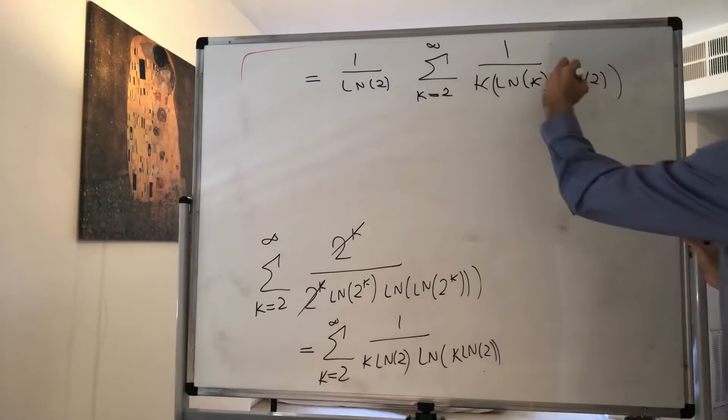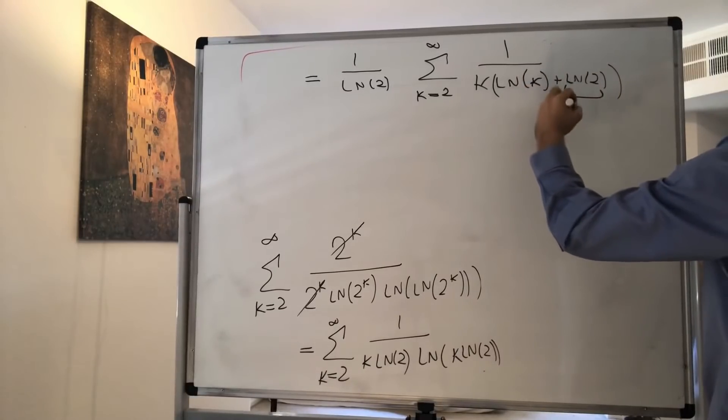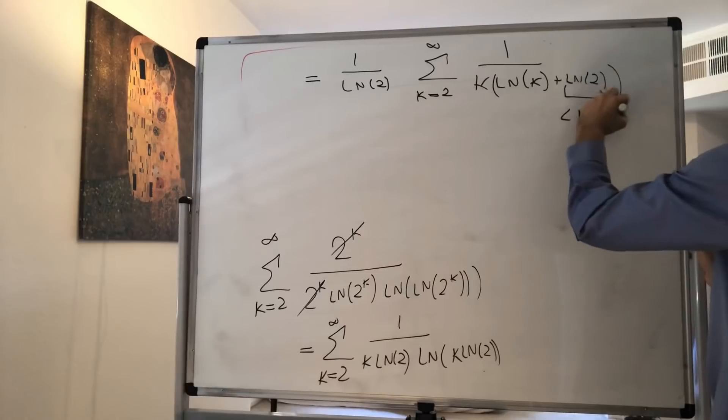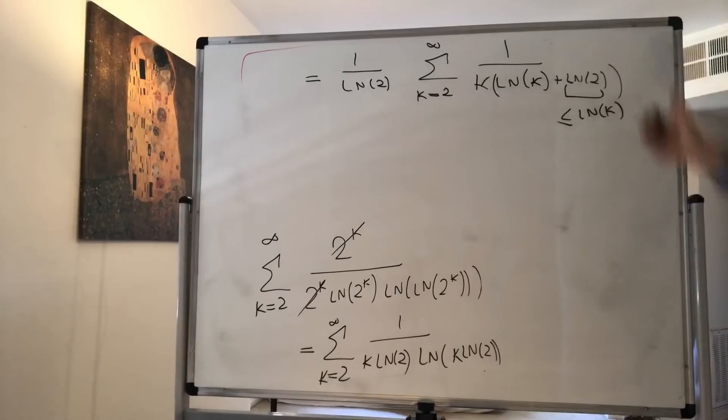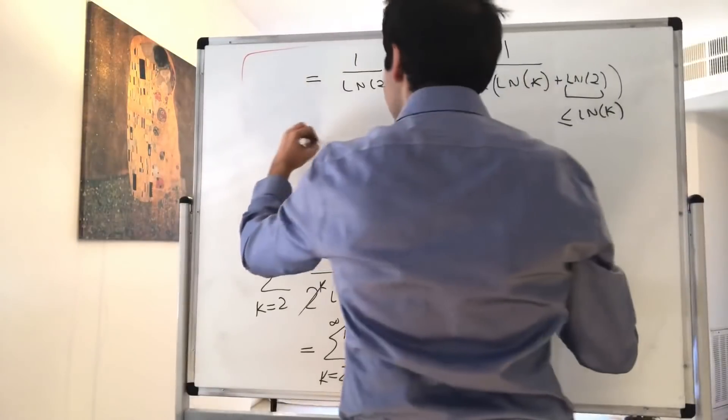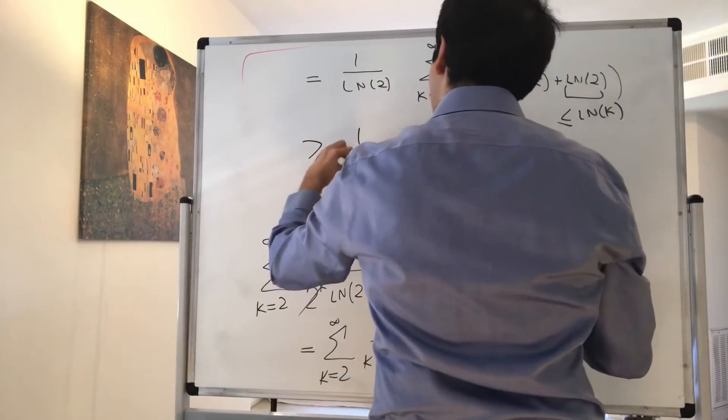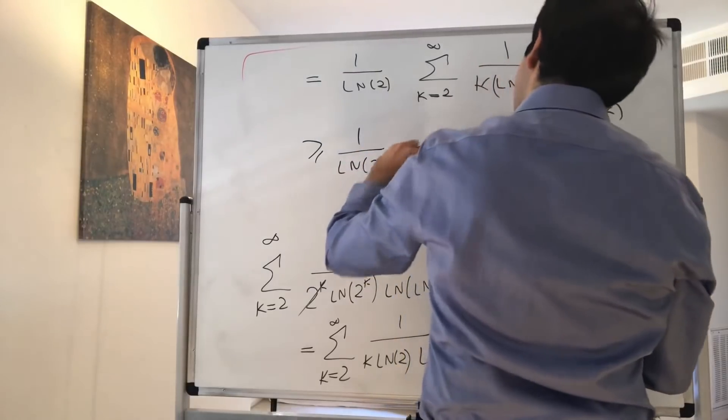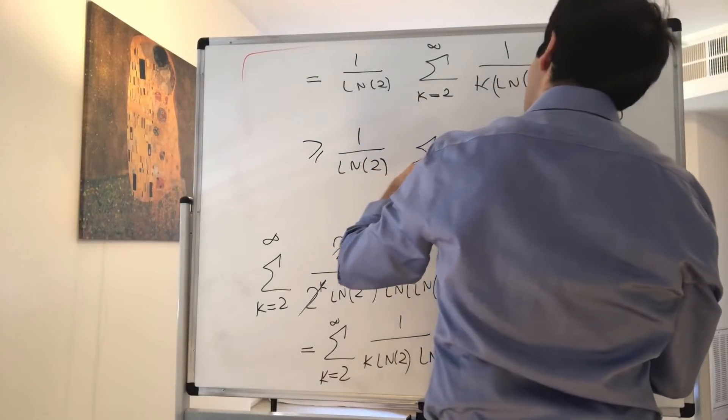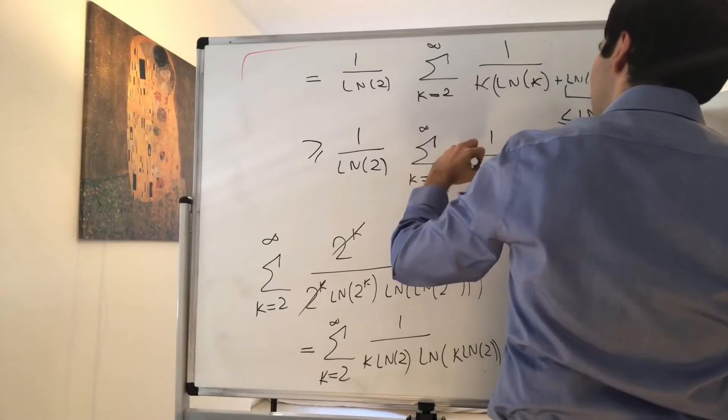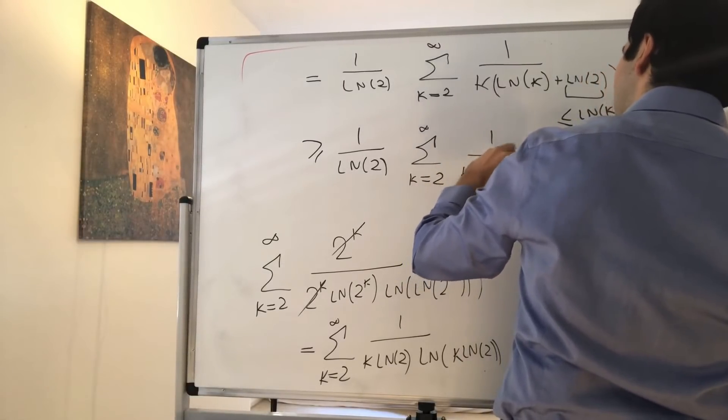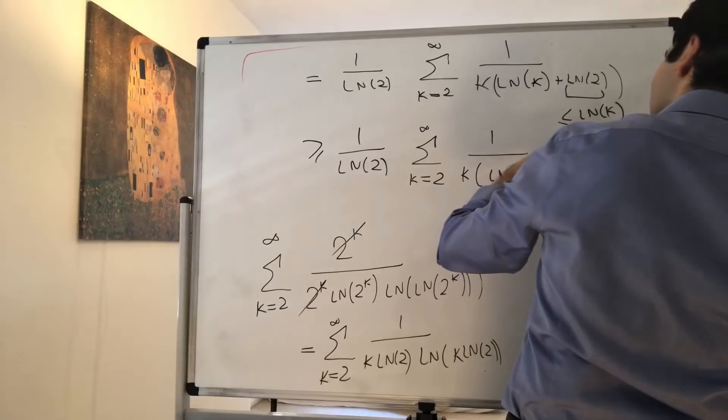And now we want to compare this to a certain series. Now ln of 2 for sure, that's less than ln of k, or I guess less than or equal. And therefore, because we're taking reciprocals, this thing is greater or equal to 1 over ln of 2 times the sum from k equals 2 to infinity of 1 over k ln of k plus ln of k.